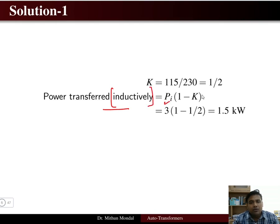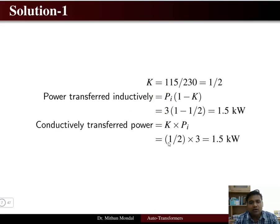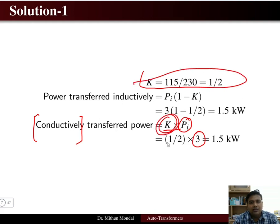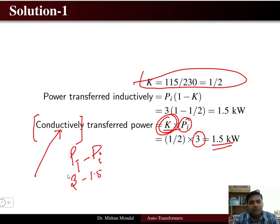The power transferred inductively is: P_inductive = P_load × (1 - k) = 3 kW × (1 - 0.5) = 1.5 kilowatt. Conductively, the power transferred is k × P_load = 0.5 × 3 kW = 1.5 kilowatt. Alternatively, conductive power = total power minus inductive power = 3 kW - 1.5 kW = 1.5 kilowatt.